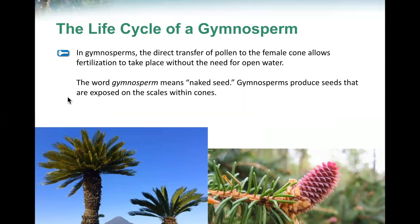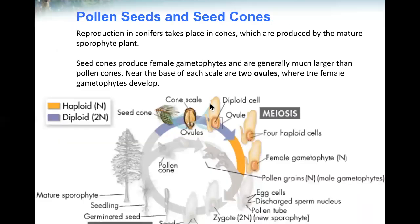The word gymnosperm means naked seed. Gymnosperms produce seeds that are exposed on the scales within cones. Reproduction in conifers takes place in cones, which are produced by the mature sporophyte plant. Seed cones produce a female gametophyte and are generally much larger than pollen cones. Near the base of each scale are two ovules, where the female gametophytes develop.